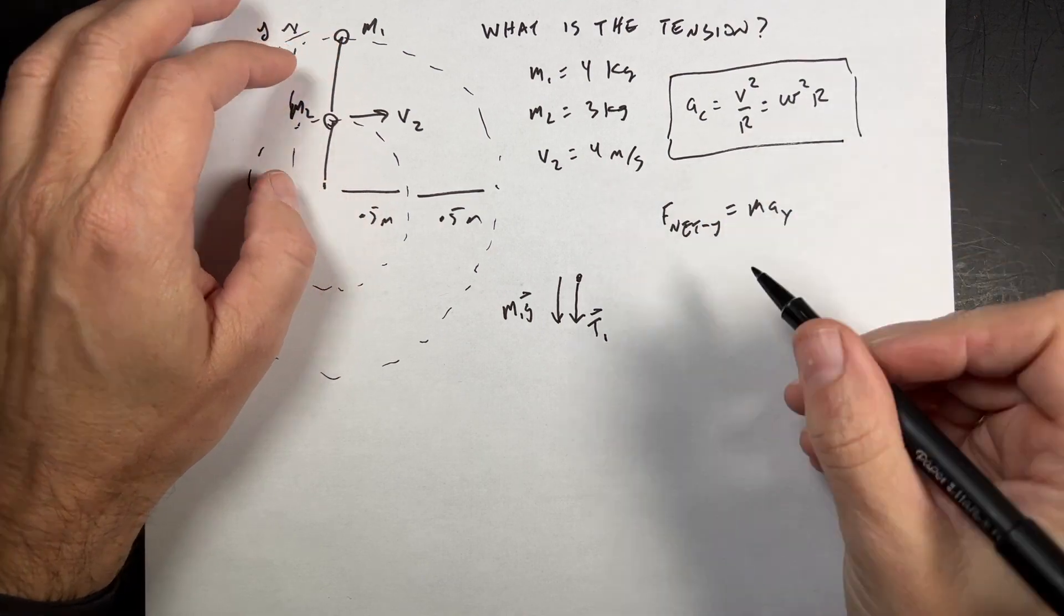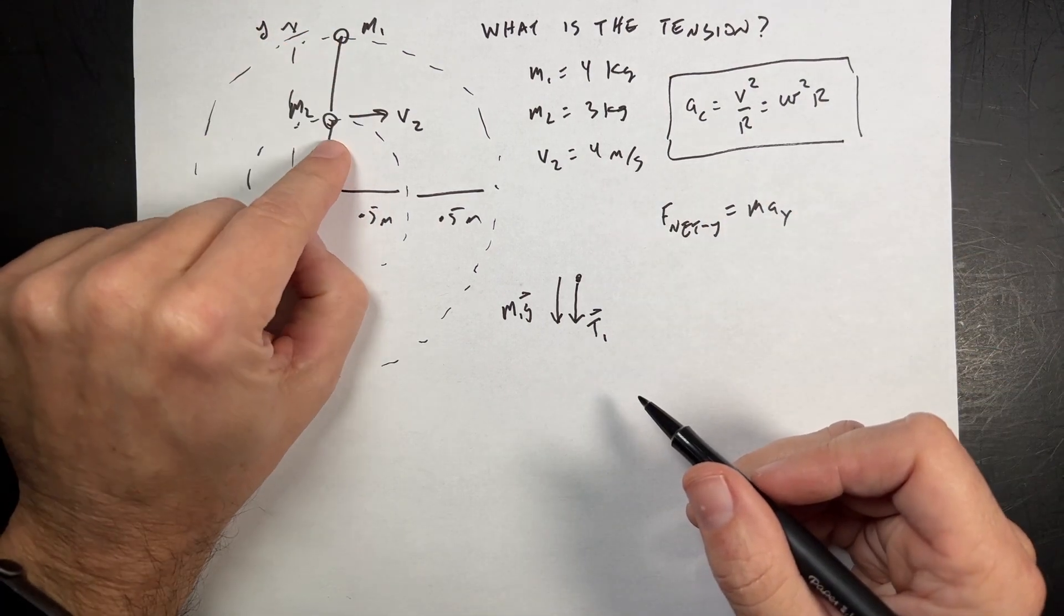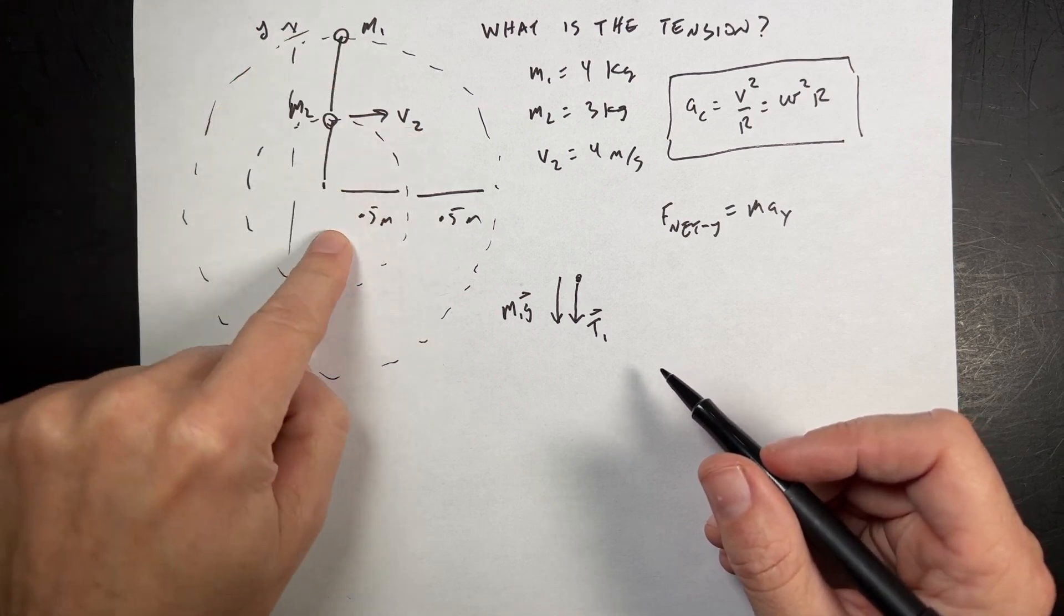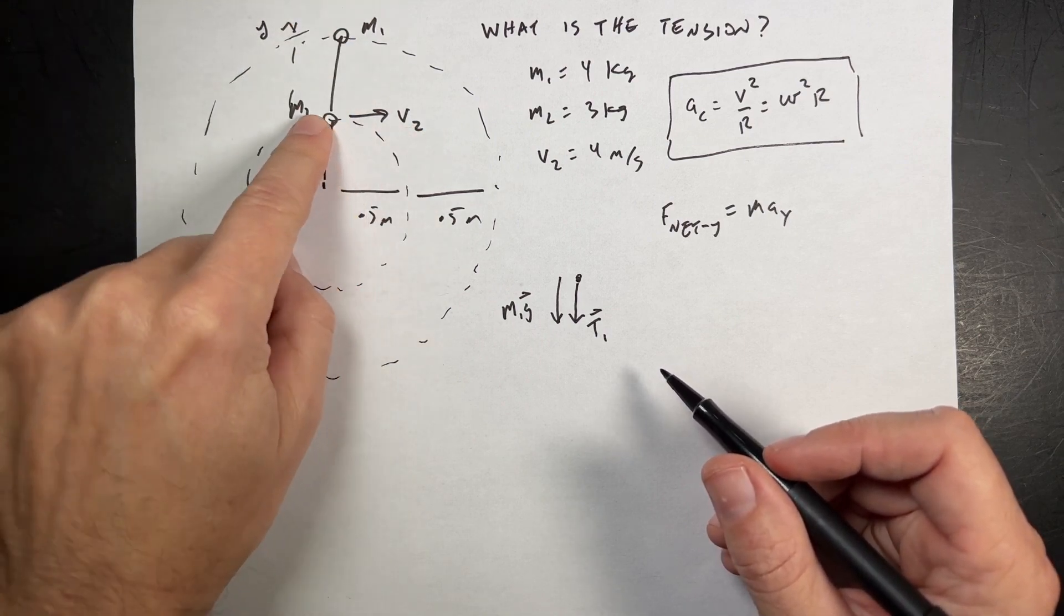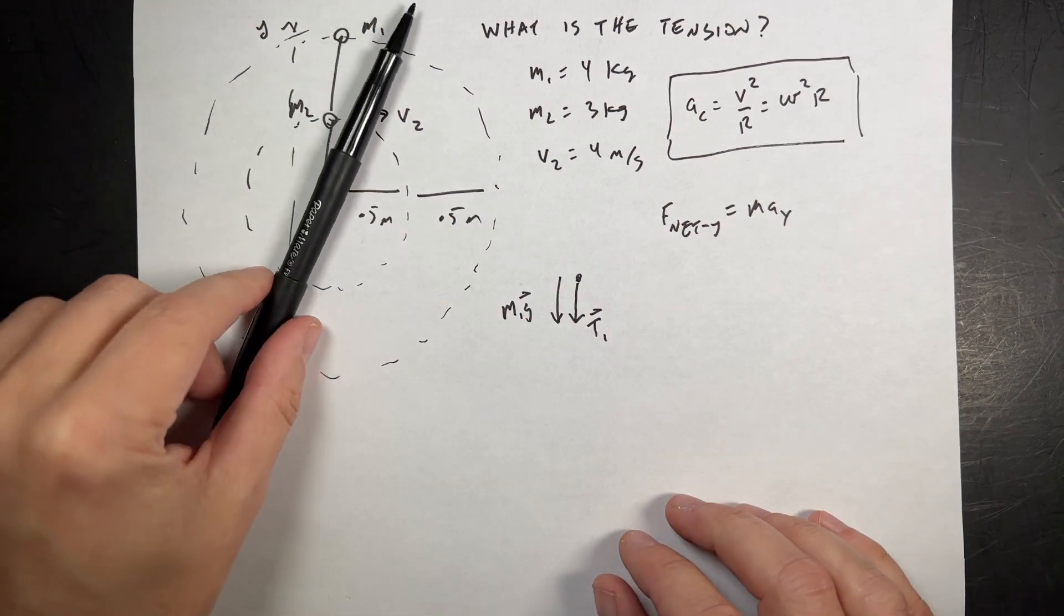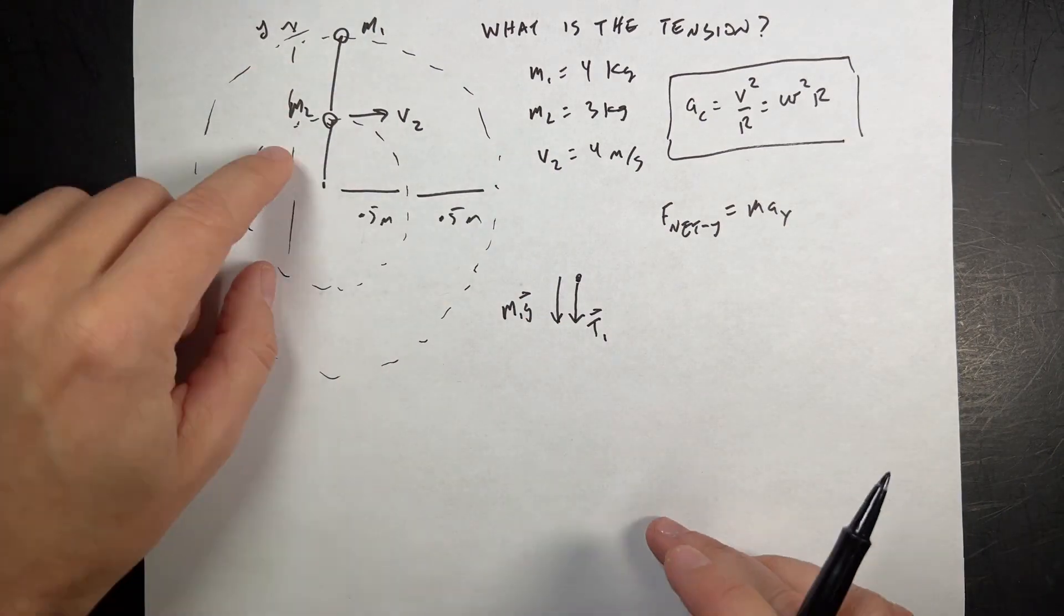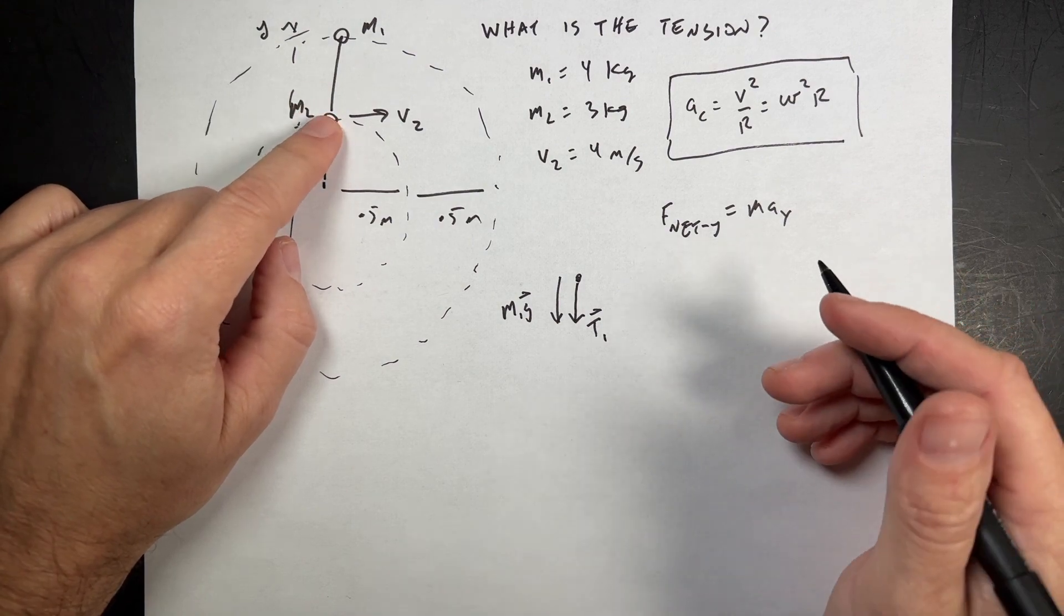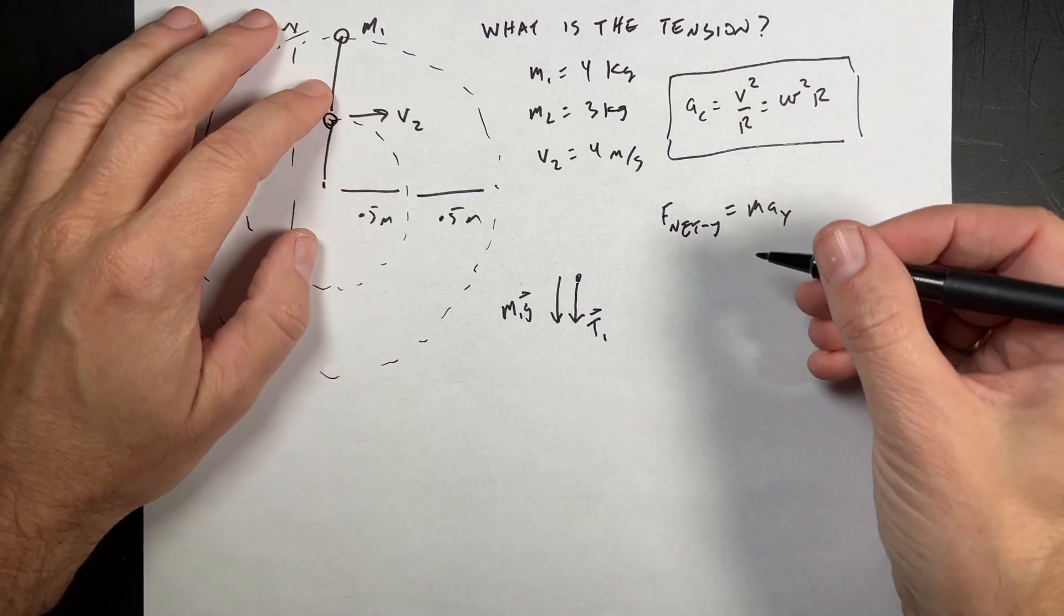Now, which one should I use? Well, I actually don't know the velocity up here. I know this velocity. But if it does say that the strings stay collinear, they stay in a straight line. So if this is rotating, then they have to have the same angular velocity. So let's just go ahead and find the angular velocity of mass 2 because that's the same angular velocity for mass 1.